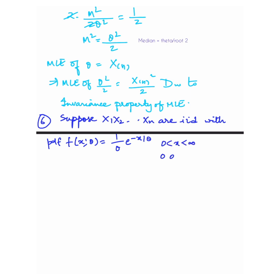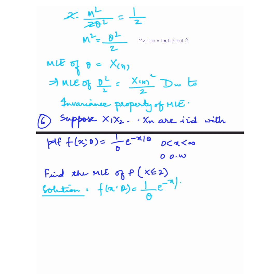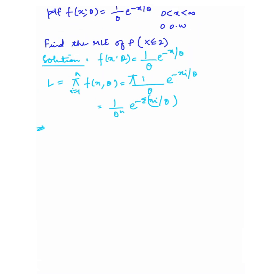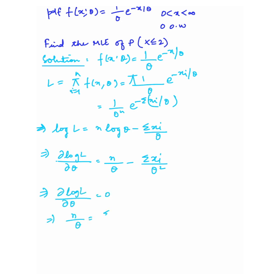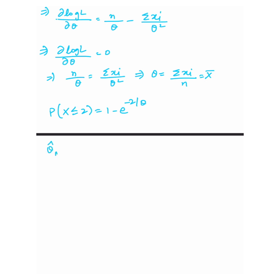Next question: x1, x2, ..., xn are iid with pdf (1/theta) e to the power minus x/theta. We have to find the MLE of P(X ≤ 2). Finding the log likelihood and differentiating with respect to theta gives theta equals summation xi over n, which equals x-bar. Since P(X ≤ 2) equals 1 minus e to the power minus 2/theta, and theta MLE equals x-bar, the MLE of P(X ≤ 2) equals 1 minus e to the power minus 2 upon x-bar.